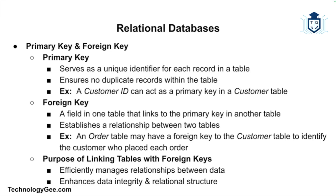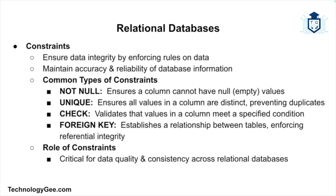Constraints in relational databases help ensure data integrity by imposing rules on the data. Common constraints include: NOT NULL, which ensures a column cannot have a null value; UNIQUE, which ensures all values in a column are unique; CHECK, which ensures values in a column meet a specified condition; and FOREIGN KEY, which enforces the link between tables. Constraints play a critical role in maintaining the accuracy and reliability of data in relational databases.